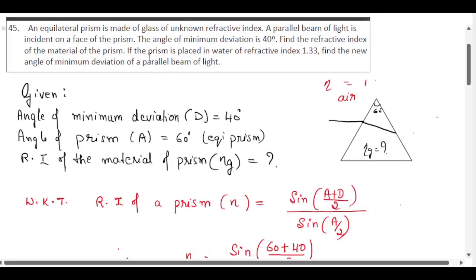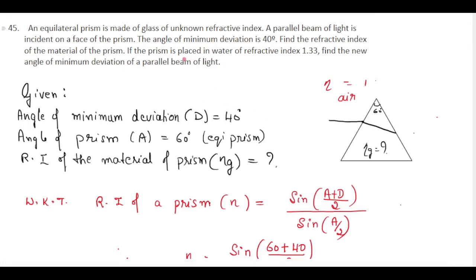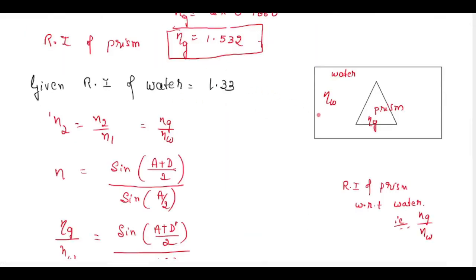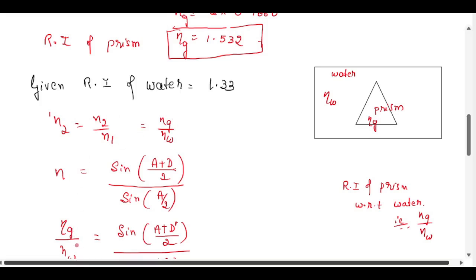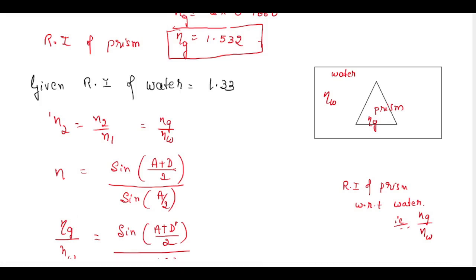For the sub-question: if the prism is placed in water of refractive index 1.33, find the new angle of minimum deviation of a parallel beam of light. Now the prism is inside water. In the first part the prism was in air; now it is in water. They have given the refractive index of water as 1.33, and we know the refractive index of the prism glass is 1.532. We need to find the refractive index of the prism with respect to water, which is N2/N1 = n_g / n_w.